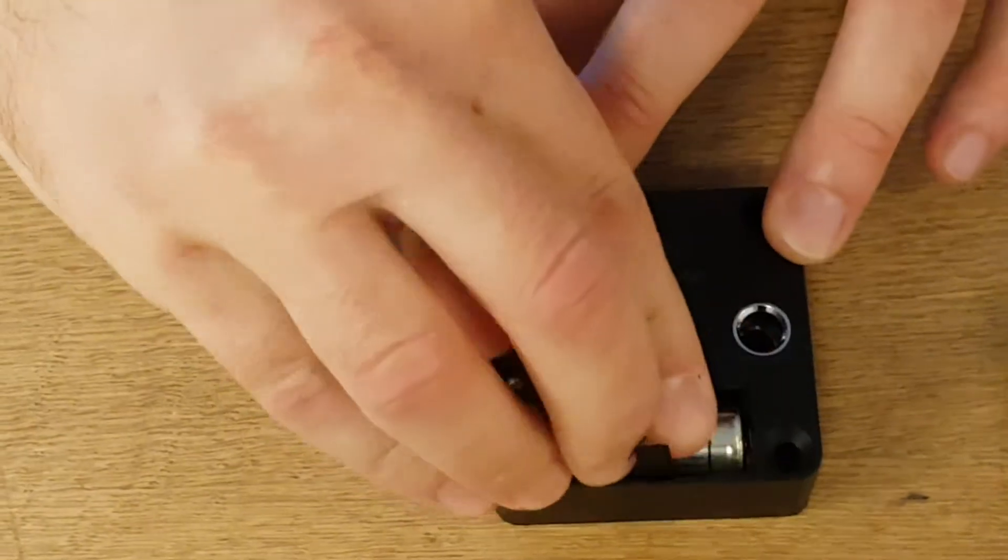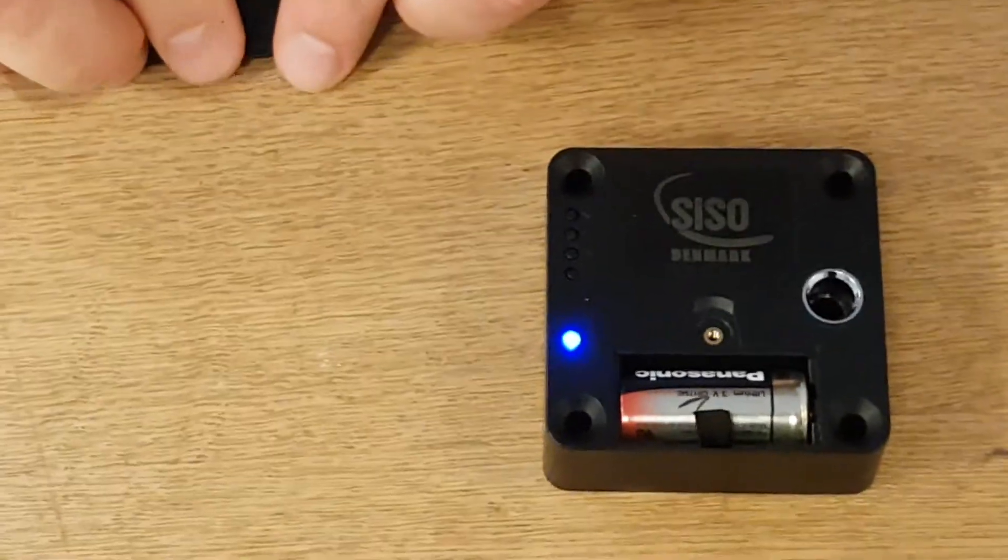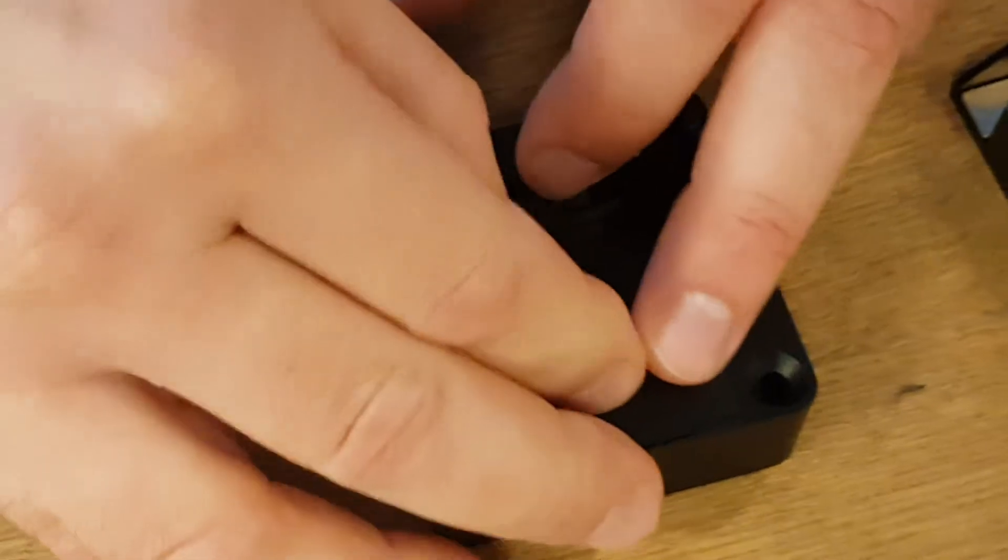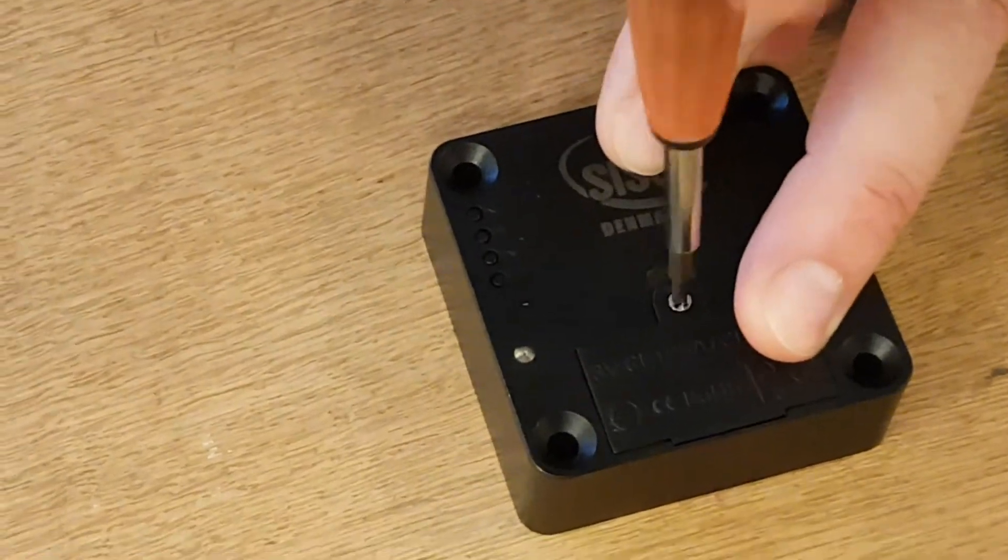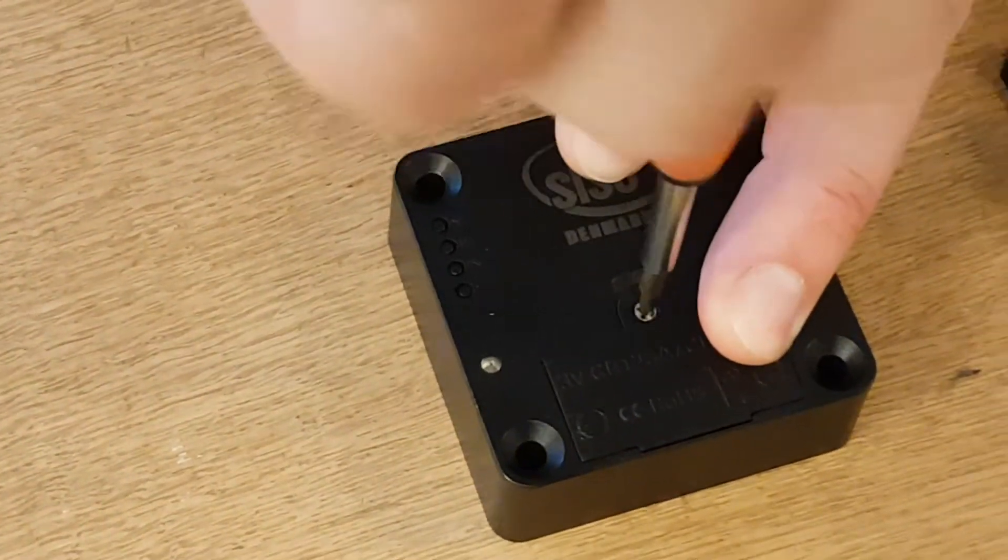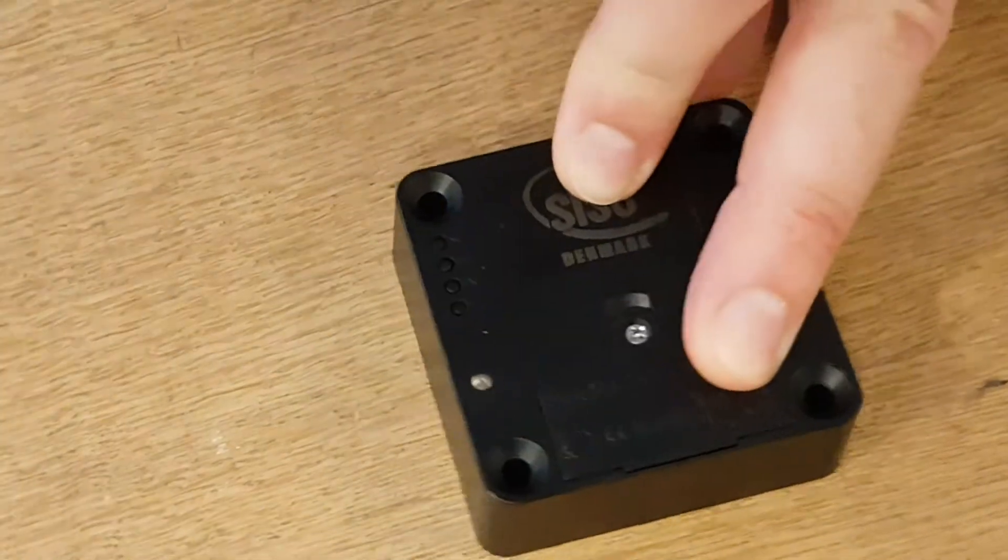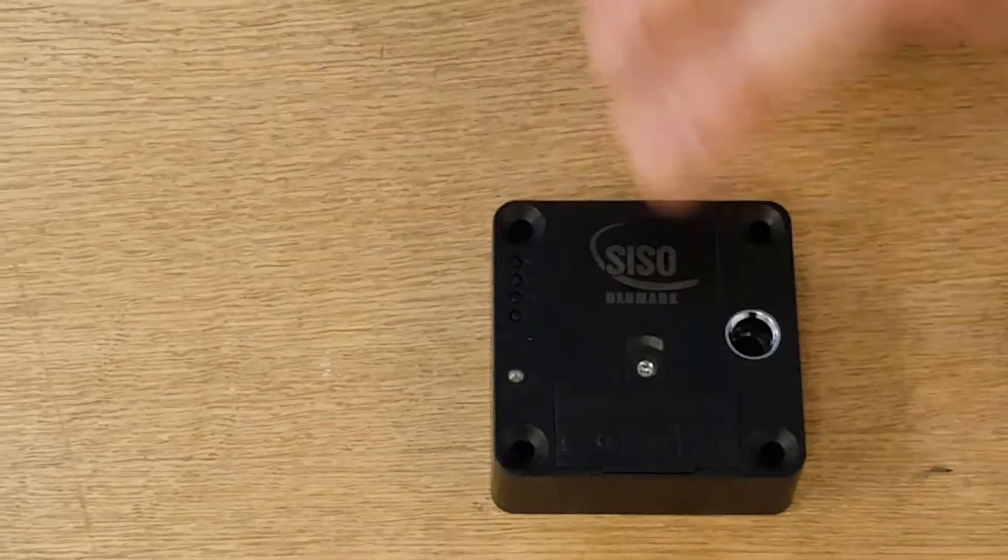So you start by inserting the battery and now you can hear the lock activated. You tighten the small screw and now you're ready to use the lock and start to program it.